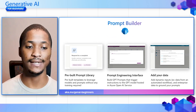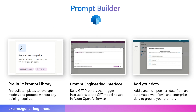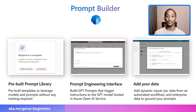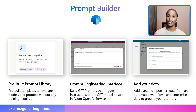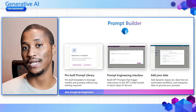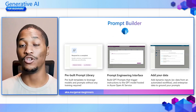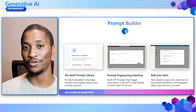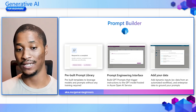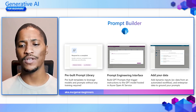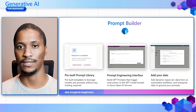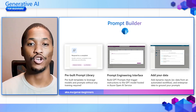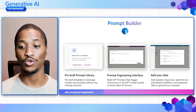Within AI Builder, there's a Prompt Builder that lets you use or create custom prompts for your solutions. You have a pre-built prompt library with templates to leverage models and prompts without any training required. If you don't want to use pre-built prompts, you can create your own custom prompts using the prompt engineering interface within Power Apps or Power Automate — building GPT prompts that trigger instructions on a GPT model hosted in Azure OpenAI service. You don't manage the models yourself; you just consume them and add dynamic inputs like data from automated workflows or enterprise data to ground your prompts.